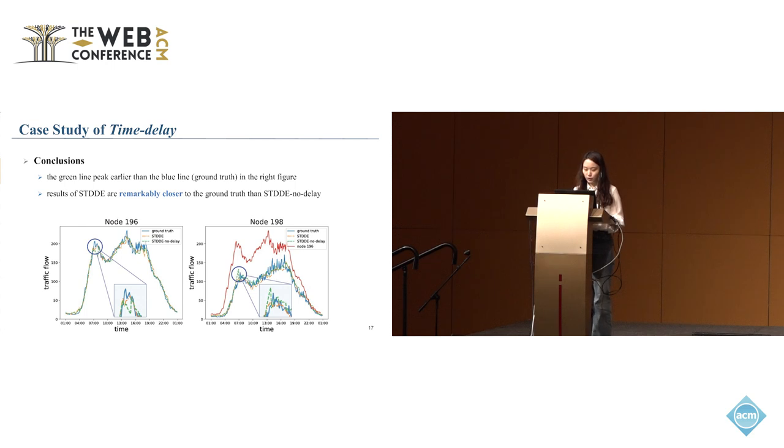As we can see in the right figure, the green line peaks earlier than the blue line, which is the ground truth. This means in the realistic scene, the time delay really exists. The right line shows that the peak appears before the real time. The yellow line shows the results of STDDE, and our results are remarkably closer to the ground truth than our baseline model.